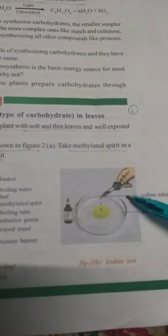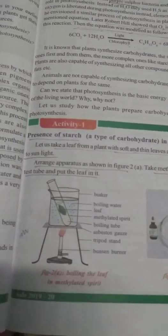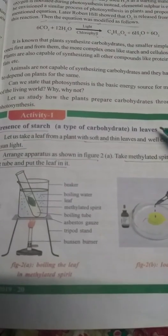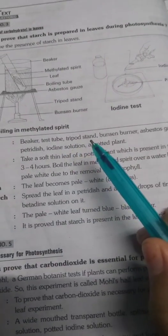We also need a petri dish and iodine solution. So what is the aim of the experiment? To check the presence of starch in leaves. And what apparatus is required? We need a beaker, a test tube, a tripod stand,